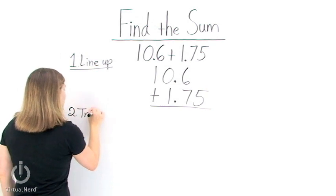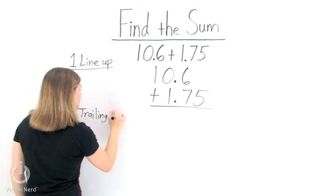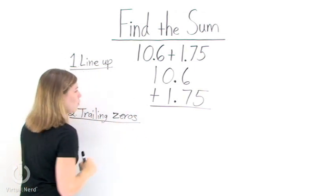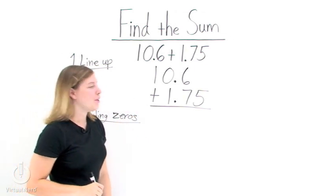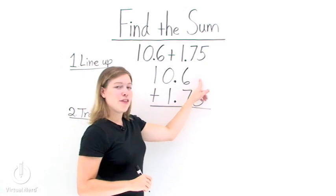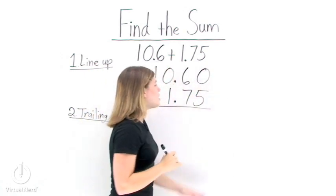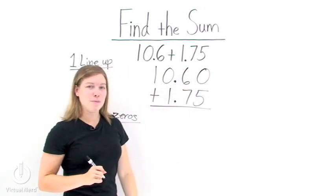Our second step in adding together two numbers that have decimal points is to add any trailing zeros that we might need as placeholders to perform the addition. So look right here. We have nothing plus 5. We need to add a trailing zero there in order to make all of our decimals line up with each other.